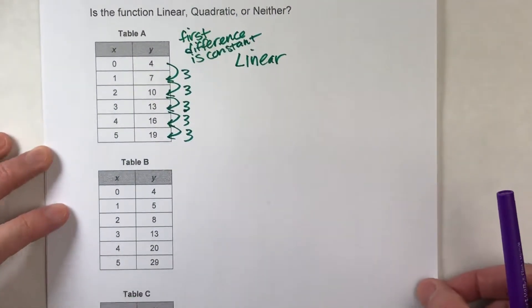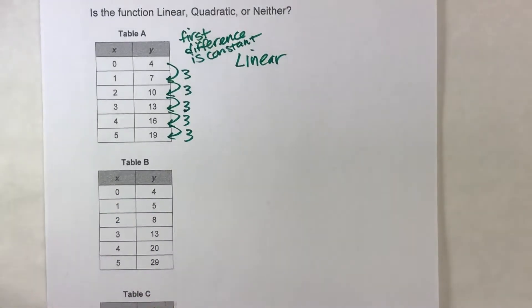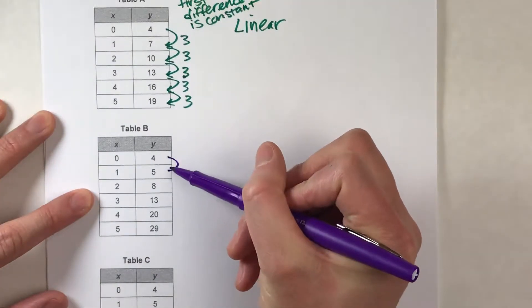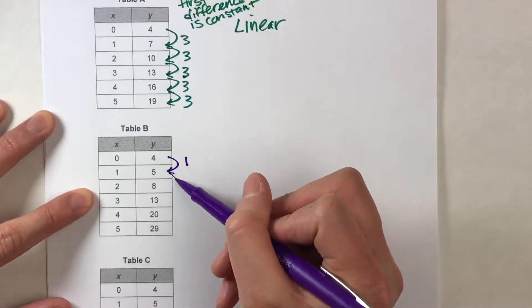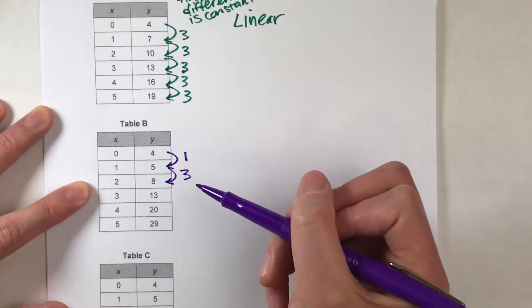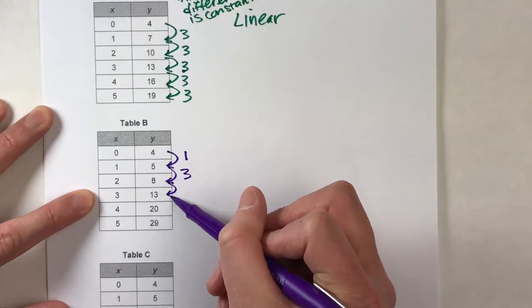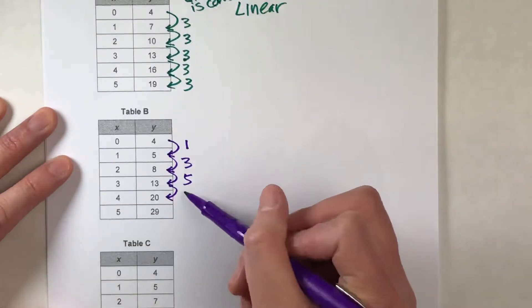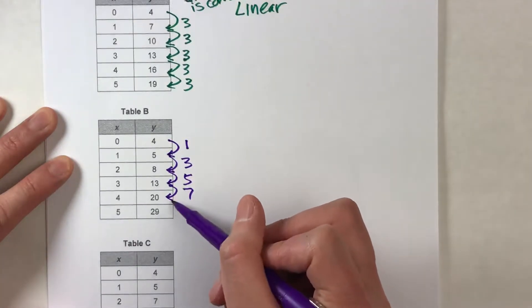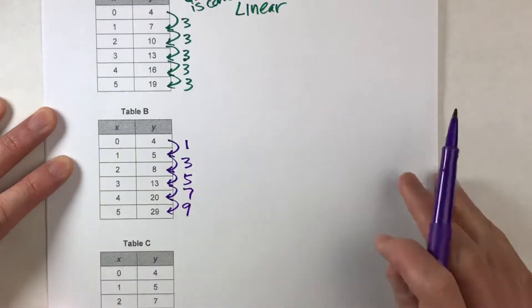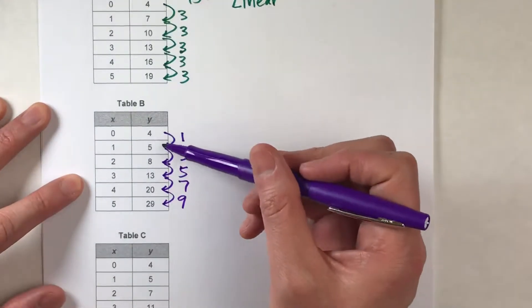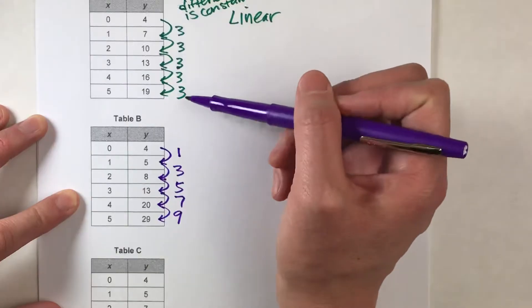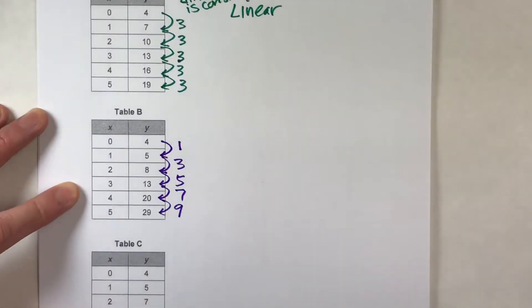Let's go to the next one here. Table B. This one's a little bit different now. So if you look here, from 4 to 5, it's adding 1. From 5 to 8, it's adding 3. From 8 to 13, it's adding 5. From 13 to 20, it adds 7. And from 20 to 29, it's adding 9. So notice, it's adding a different amount each time. This is not linear. Remember, linear would be adding the same amount each time.